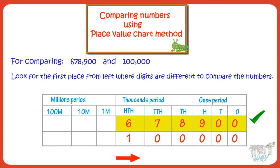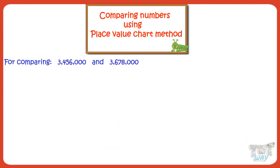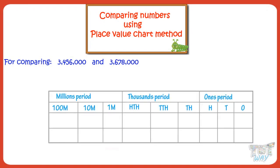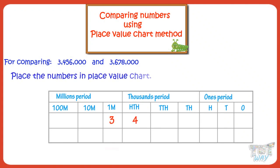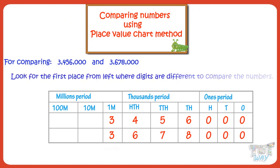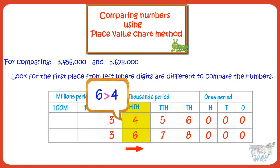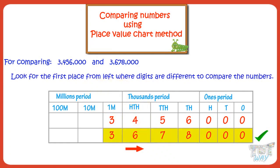Now let's take another example. Here again, we have two numbers. Let's compare the numbers. First of all, write the numbers in the place value chart by writing each digit under its place. Now, in the place value chart, we start at the left and look for the first place where the digits are different. If we start at left, we have different digits at the 100,000 place — there are 4 and 6. Since 6 is bigger than 4, the number which has 6 is the bigger number.